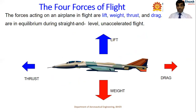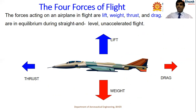There are four forces acting on an aircraft. The forces acting on an airplane in flight are lift, weight, thrust, and drag. These forces are in equilibrium during straight and level unaccelerated flight. Lift always acts upward, thrust acts forward to move the aircraft, drag is the opposing force of thrust, and weight always acts downward due to gravity.